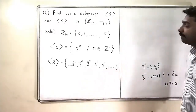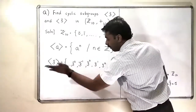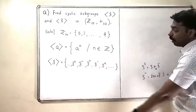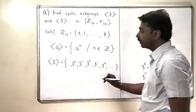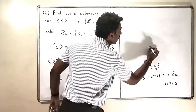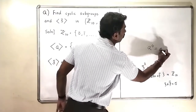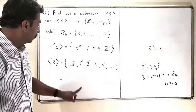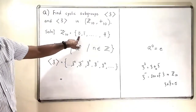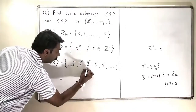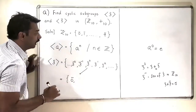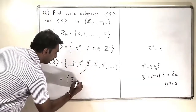For the time being, I will not look at the negative powers. I will start looking at the non-negative powers of 3̄. So what is 3̄ raised to 0? By our theorem, A raised to 0 in a group is always equal to the identity. The identity of Z10 is 0̄. Then 3̄ raised to 1 is 3̄ alone.